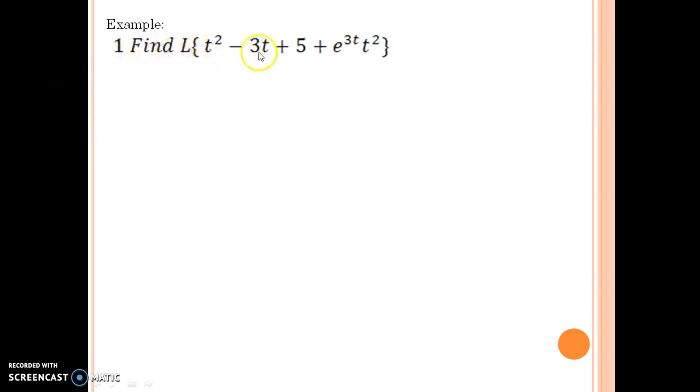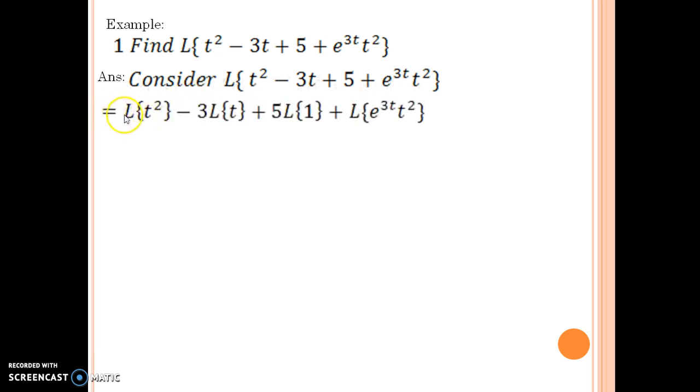We are going to find Laplace of t² - 3t + 5 + e^(3t)·t². Let us consider the given question. This can be simplified further as Laplace being distributed over plus or minus signs, and then we can take scalars outside.